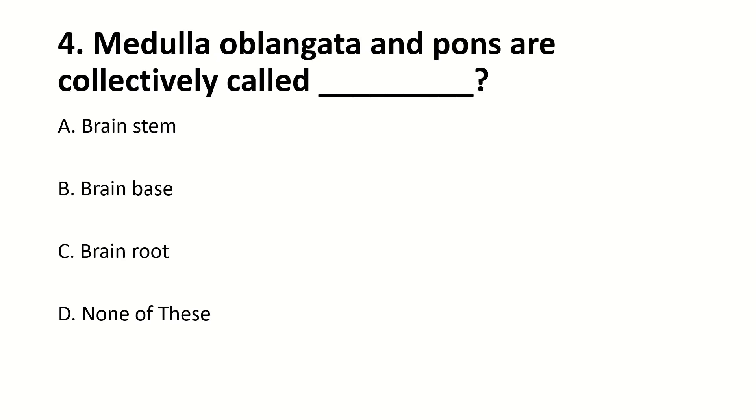Medulla oblongata and pons are collectively called ___. The right answer is A: brain stem.